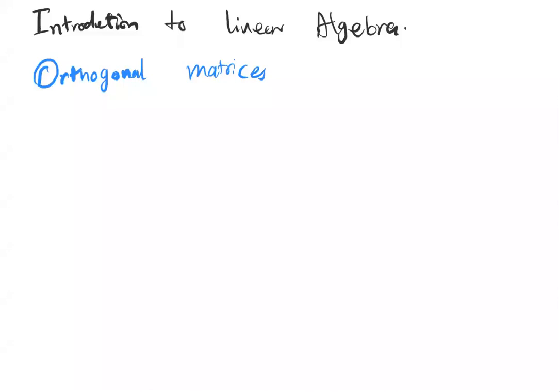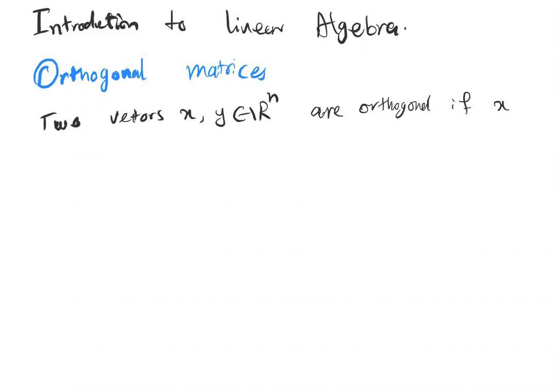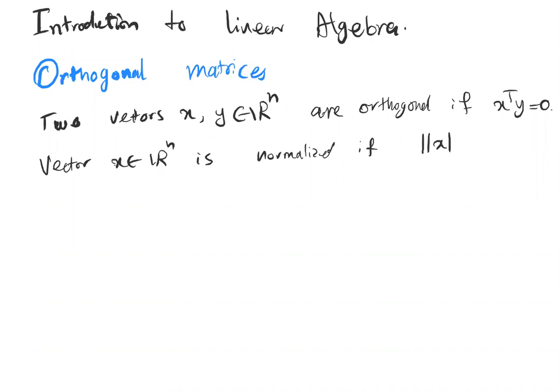Let's start with the definition of orthogonal vectors. Two vectors x and y which are n-dimensional are orthogonal if x transpose y is equal to zero. We also want to define the normalized vector: vector x which is n-dimensional is normalized if the 2-norm of x is equal to one.